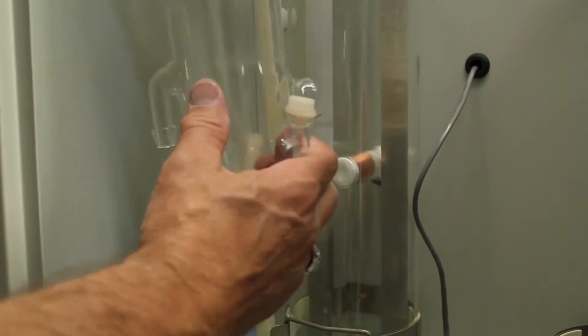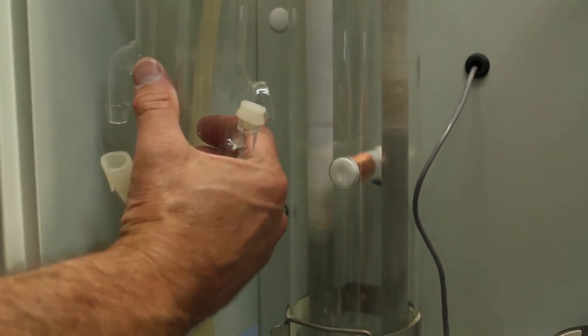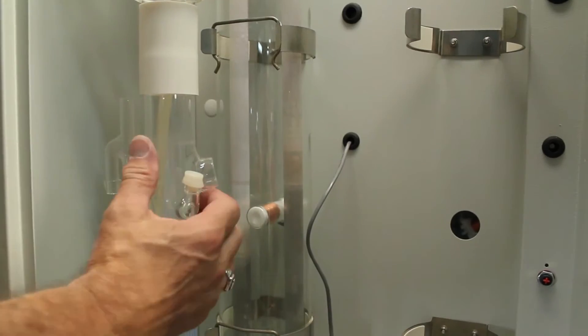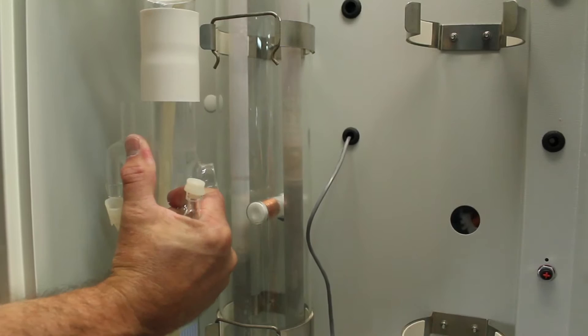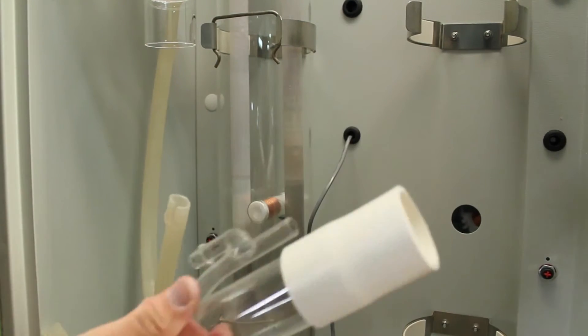Once that's removed, we can take the constant level device and slide it down off the silicone sleeve. Sometimes you won't be able to do that, you might have to cut the sleeve lengthways, but slide that down.